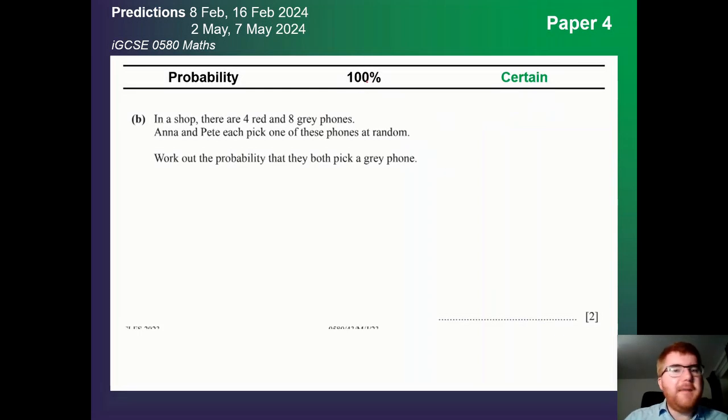Probability back at 100% at certain. Note that probability is well distributed across paper 2 and paper 4. So this is probably the most important topic because it's almost guaranteed to appear on both papers.